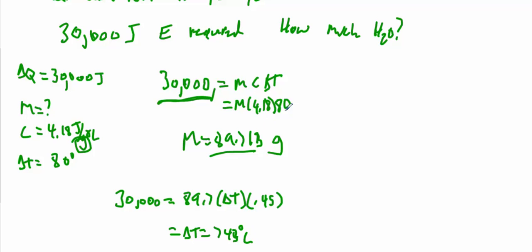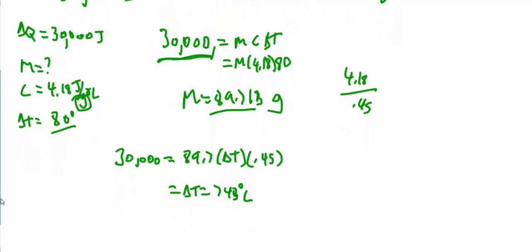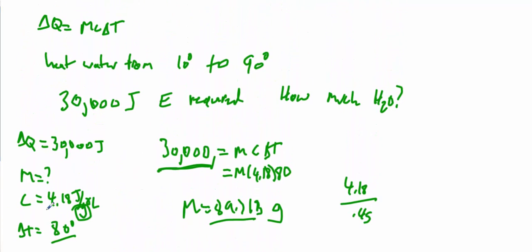Now, an easier way to do that would have been 4.18 divided by 0.45, because that would tell me the ratio of the specific heats, 4.18 divided by 0.45, is 9.29. And then I could multiply that by this change in temperature times 80, and I would get the same thing, 743 degrees Celsius, as long as the mass worked out the same and the change in temperature was the same. So these are not difficult problems. You're just using that heat equation. But you should have a pretty good idea of what it means when we're talking about specific heat and how much energy is gained or lost when a substance is going through a temperature change.